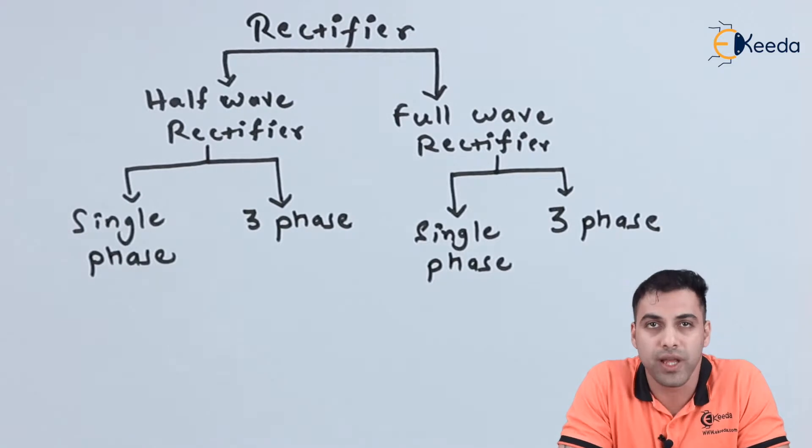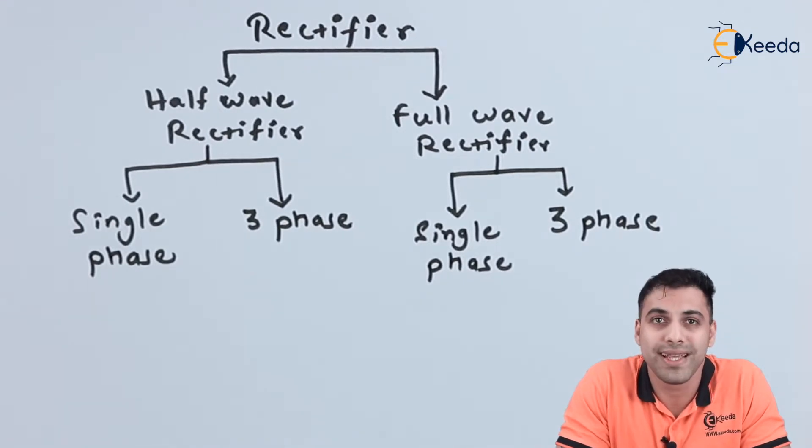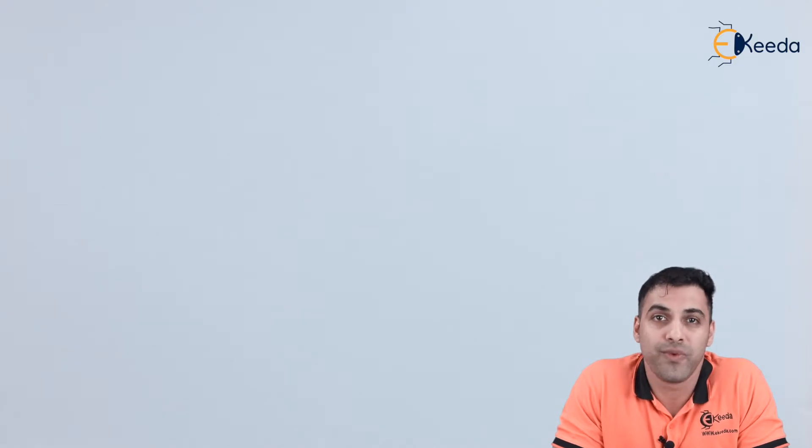Today we are going to discuss single-phase half-wave rectifier. A single-phase half-wave rectifier is a type of rectifier where the input sine voltage or input AC voltage is a single-phase AC voltage. So let's draw the circuit diagram of a single-phase half-wave rectifier.